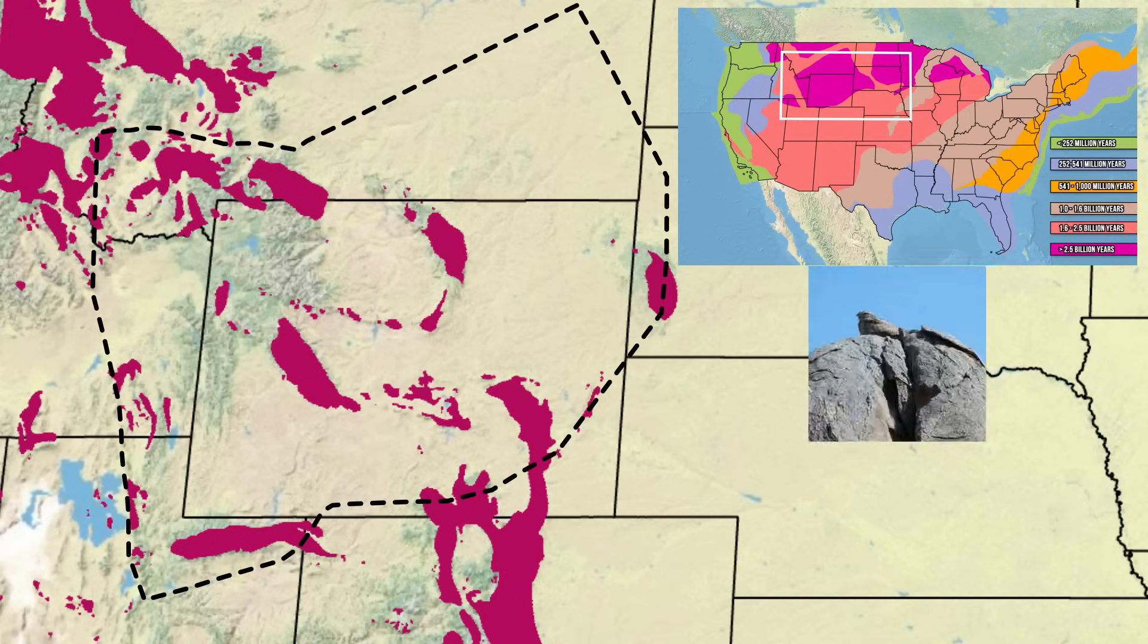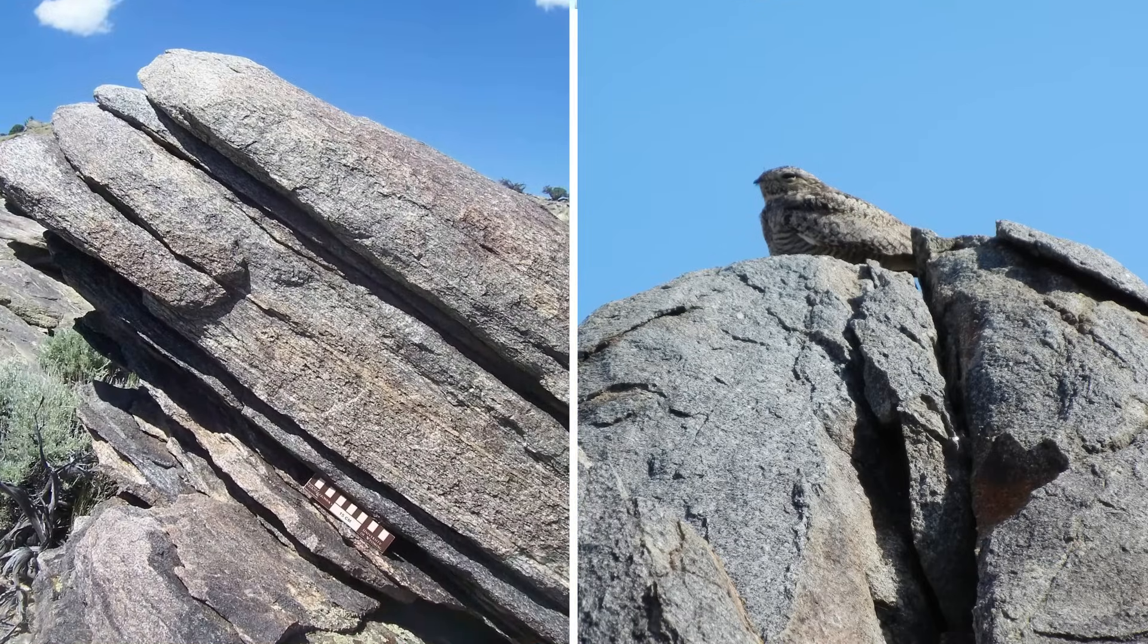This is what the oldest rocks in Wyoming look like. They formed from magma that crystallized underground, and these igneous rocks were later deformed to varying degrees. The rock on the left is more deformed than the rock on the right.